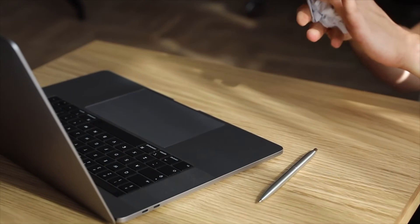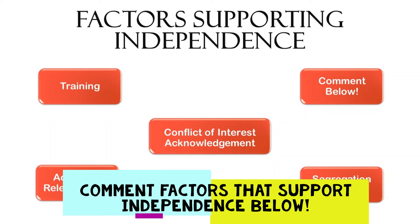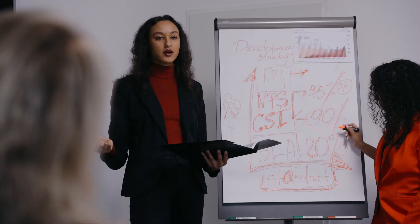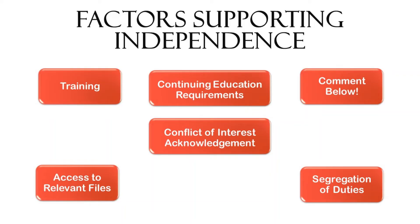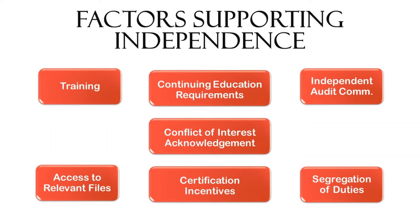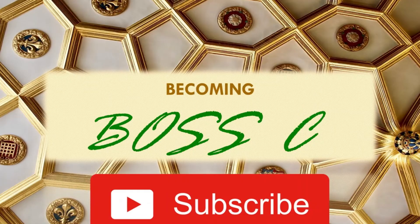Personally identifiable information such as employees' social security numbers and personal addresses may be removed from files; however, other data should be readily available for internal auditors. Additional factors supporting independence include the chief audit executive promoting professionalism through continuing education and certifications, requiring all audit committee members to be independent of the company, and establishing a formal audit charter that guides internal auditors' work and standards.